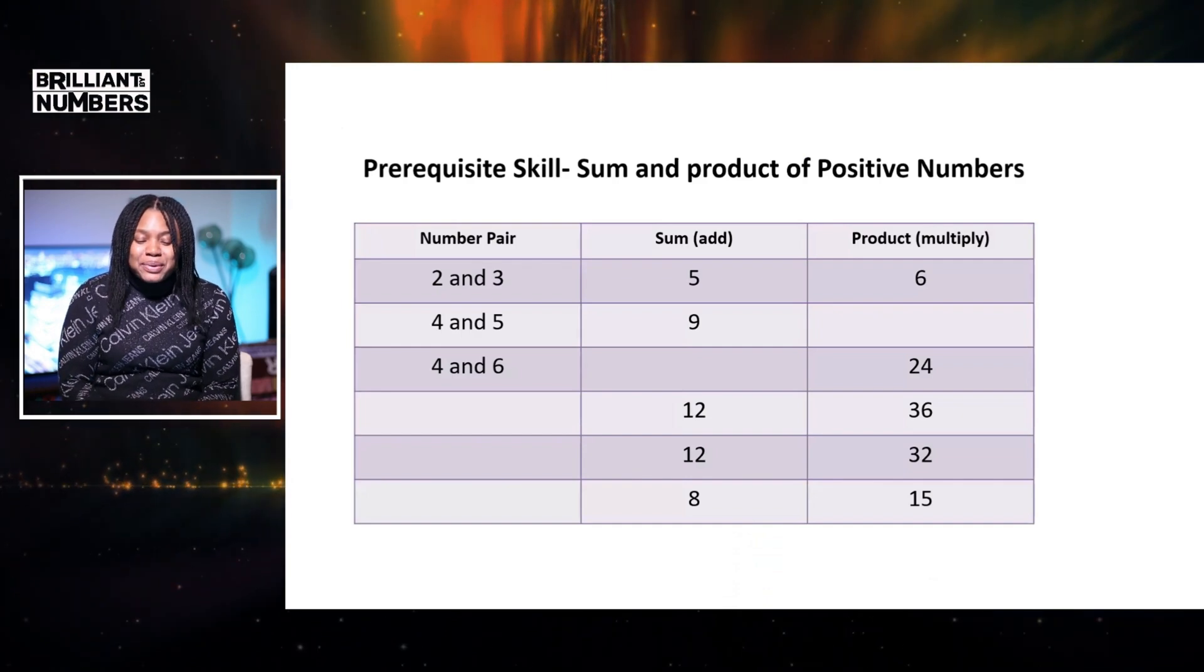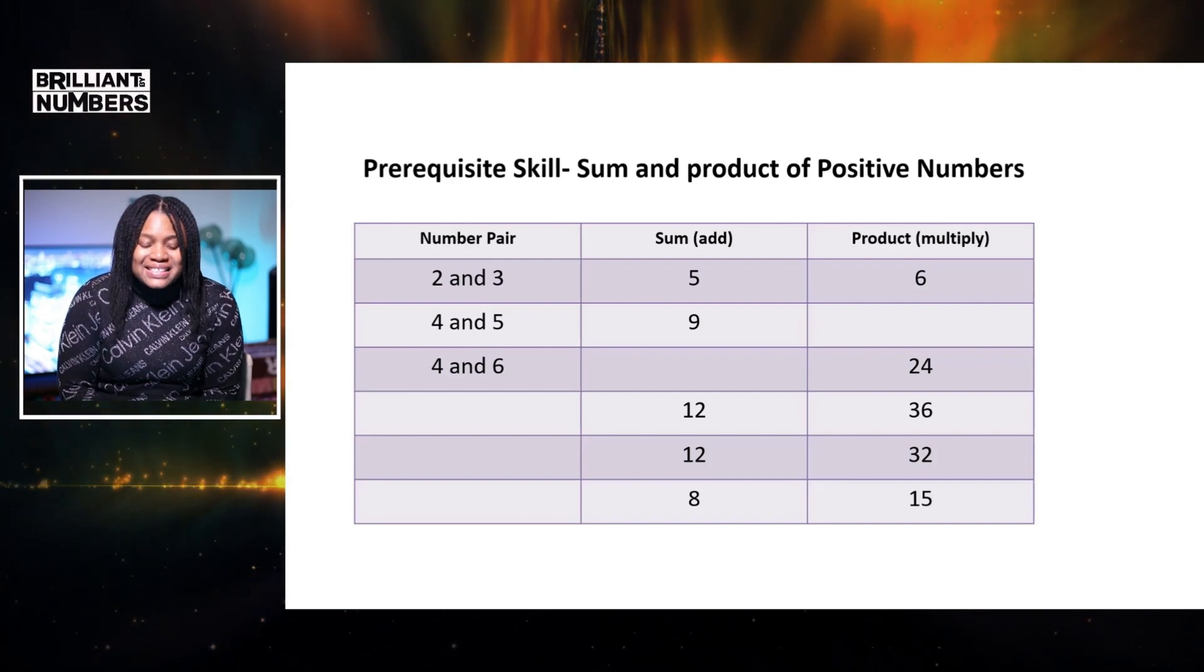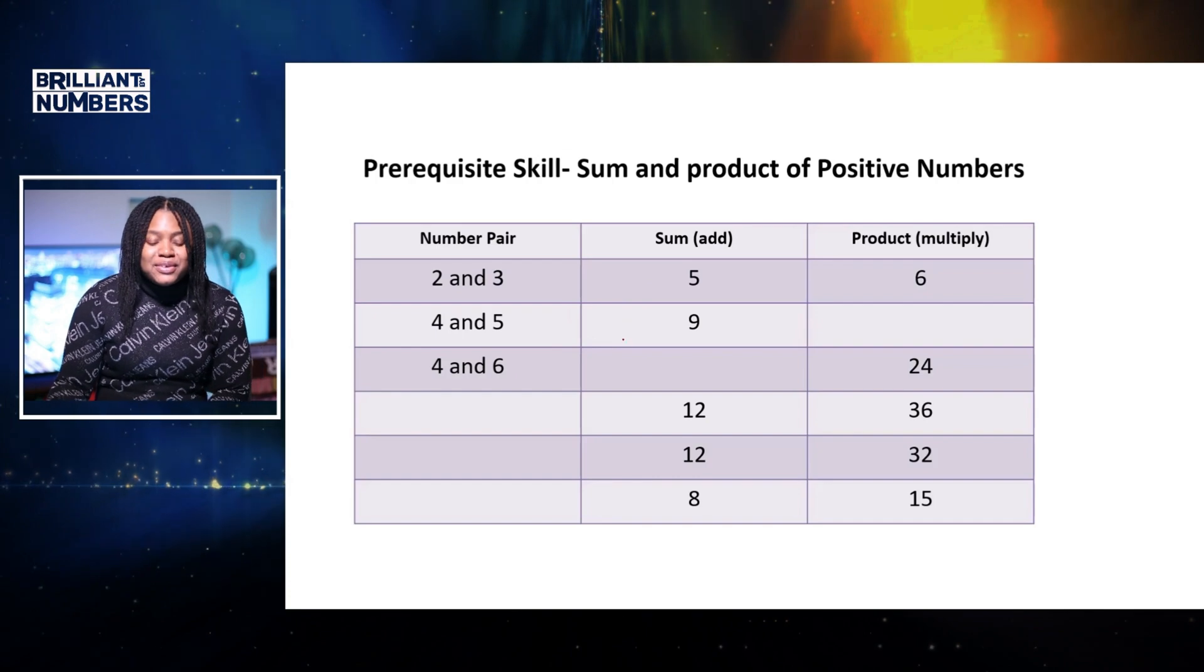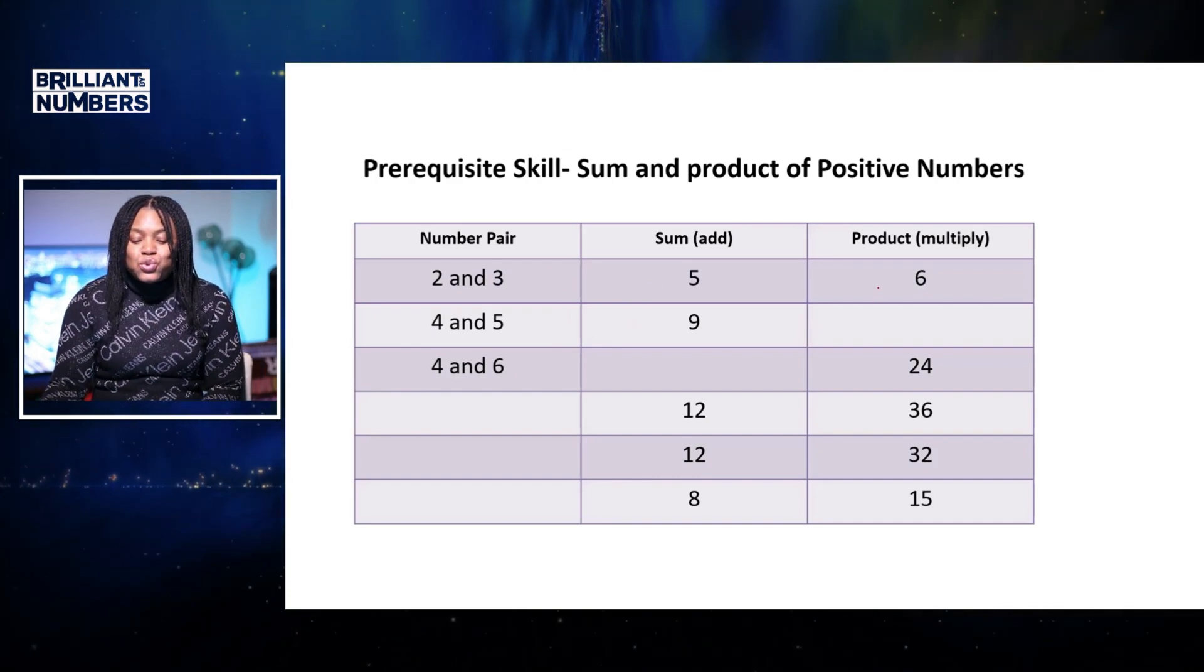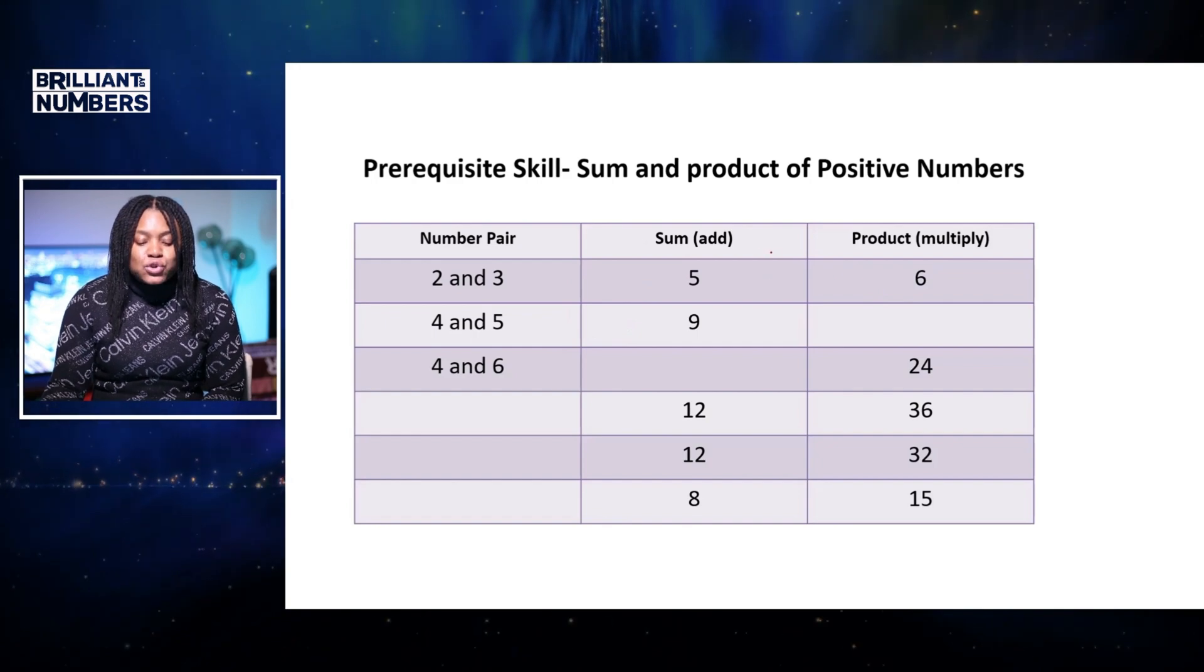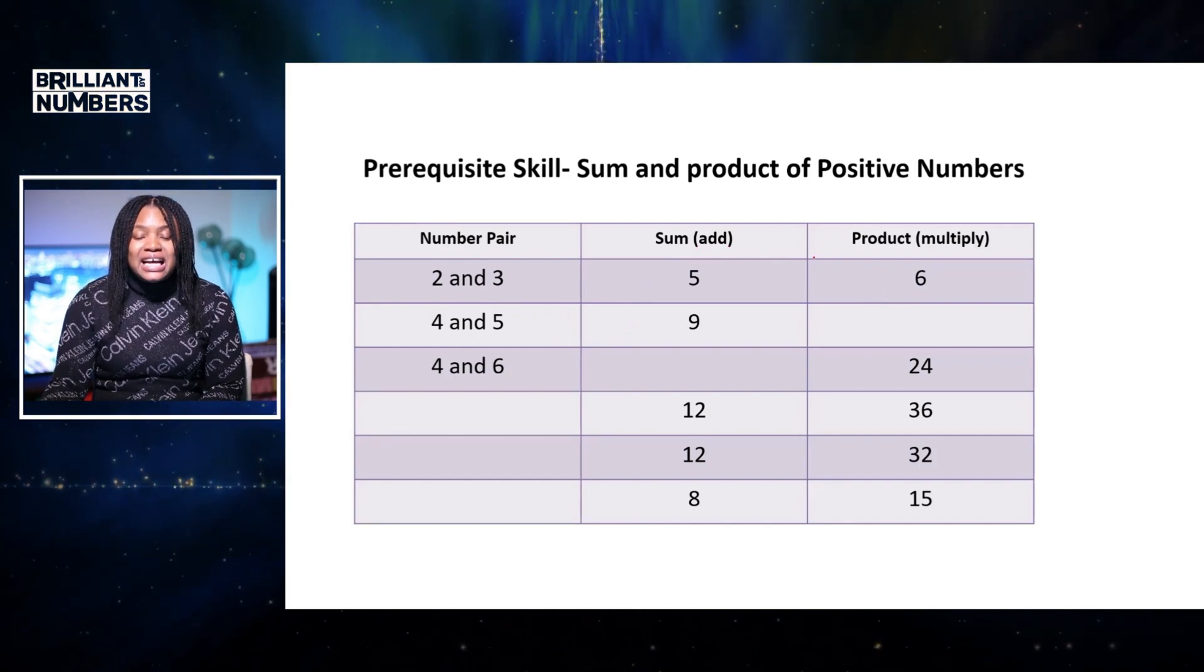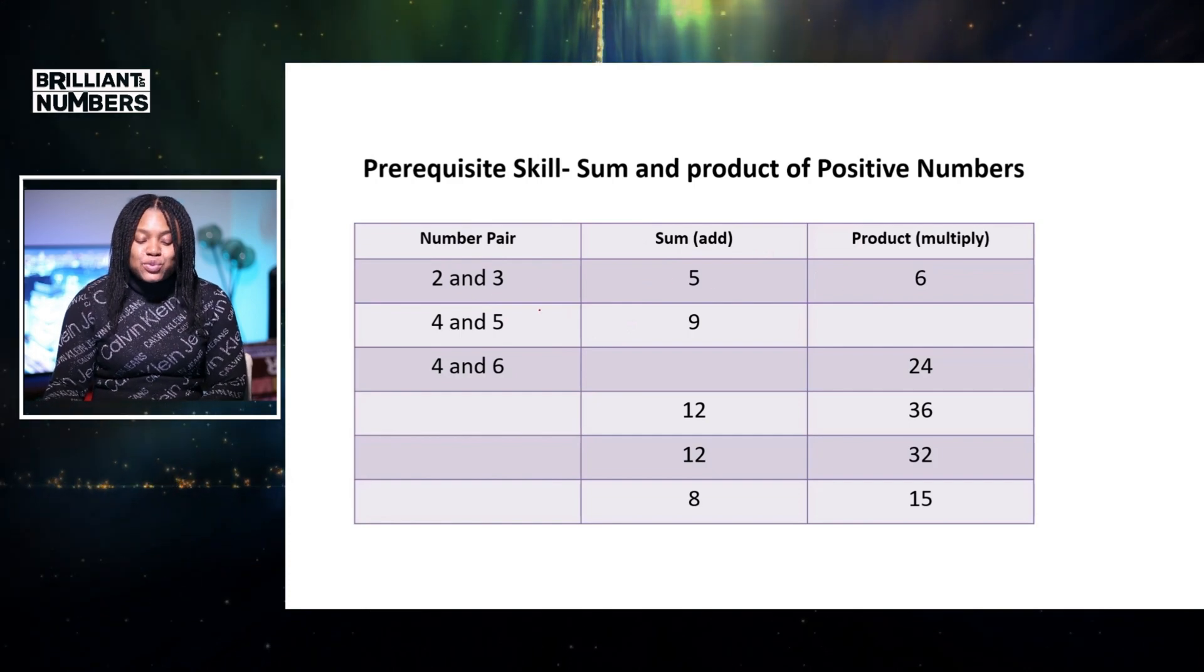So here is a prerequisite skill that will help you on your journey of factorization. So I've prepared here a number pair. We're going to find the sum of each of the pairs and also the product. And I've also put in bracket here so you understand or be reminded that sum means addition and product means multiplying. So I've done the first one extensively.